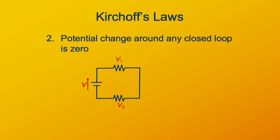The second law is an expression of conservation of energy. This says that the potential change around any closed loop in a circuit is zero.